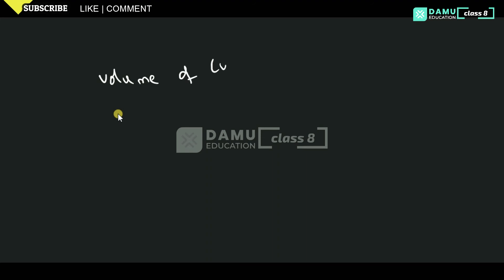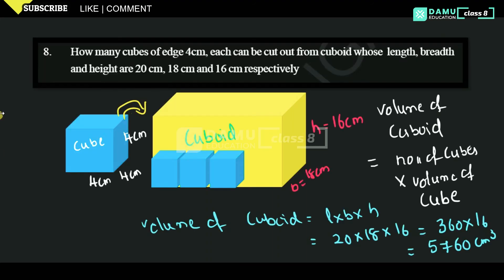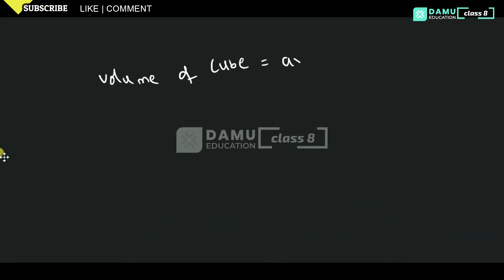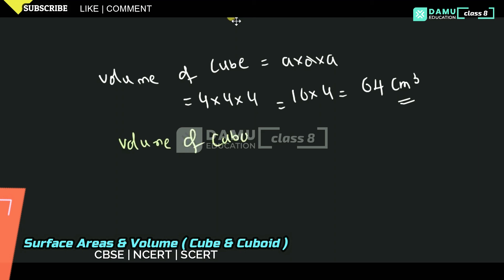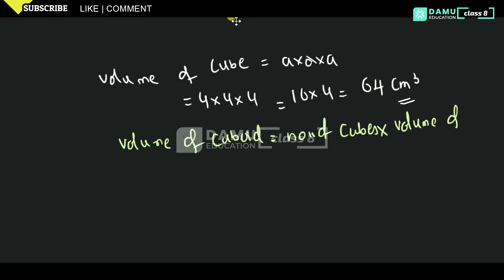Then what is the volume of the cube? Volume of cube — the dimensions are 4 cm, 4 cm, 4 cm — that is A into A into A, which is 4 into 4 into 4. So that is 64 centimeter cube. The formula is: volume of cuboid equals number of cubes into volume of each cube.